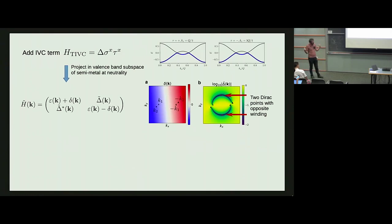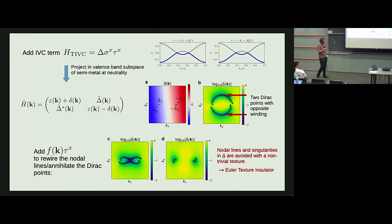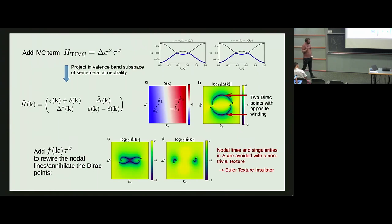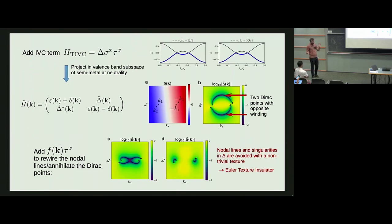Crucially, these two remaining Dirac points have opposite winding. By adding an additional term to bring them together, the nodal arcs are rewired to connect Dirac points within the same valley, and now there is no point in the Brillouin zone where both δ and Δ̃ vanish simultaneously—meaning I have successfully isolated a single band, which I can fill to get an exciton insulator at ν = -2. The key point again is that you have a non-trivial texture, as the isolated band must form some texture to hide the singularities of the underlying Dirac bands.